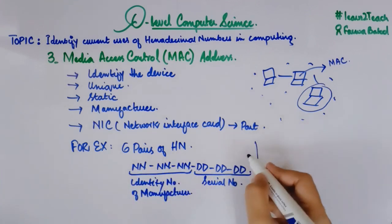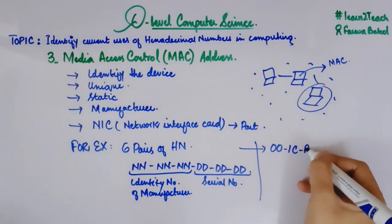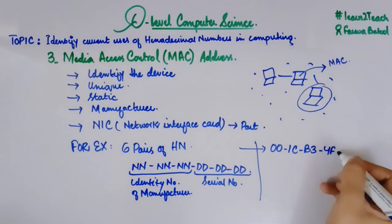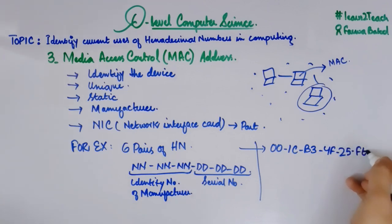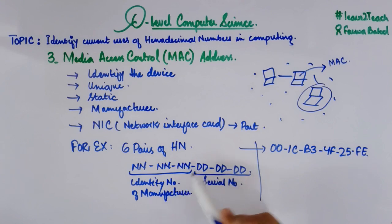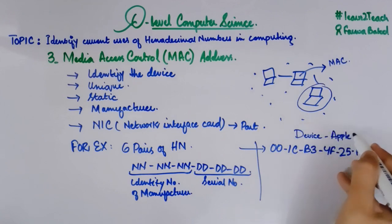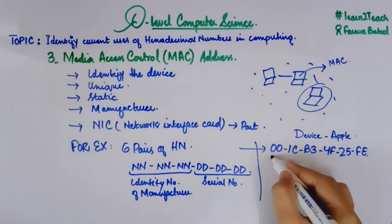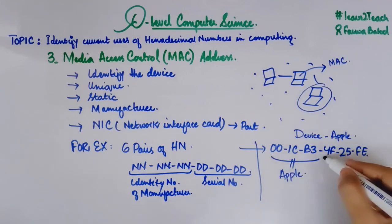For a real example, let's take the MAC address: 00, 1C, B3, 4F, 25, FE. These three pairs of hexadecimal represent the identity number of the manufacturer — for example, my device belongs to Apple, so Apple is the manufacturer. These first three pairs represent the company Apple, and the last three pairs represent the serial number of that device.